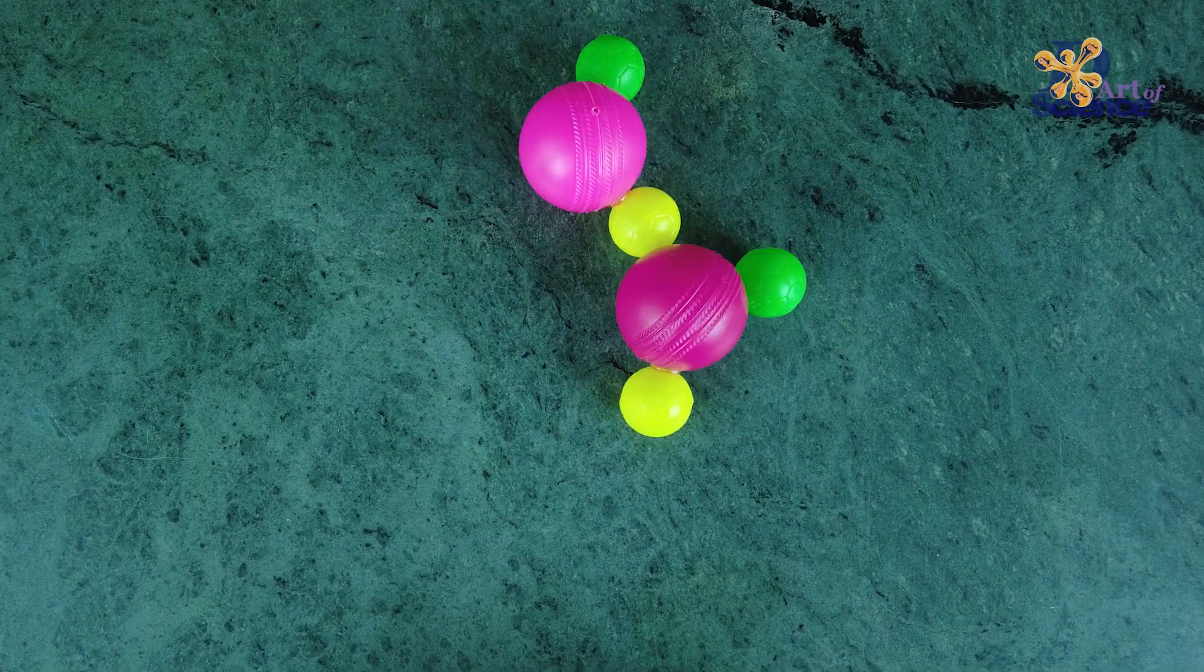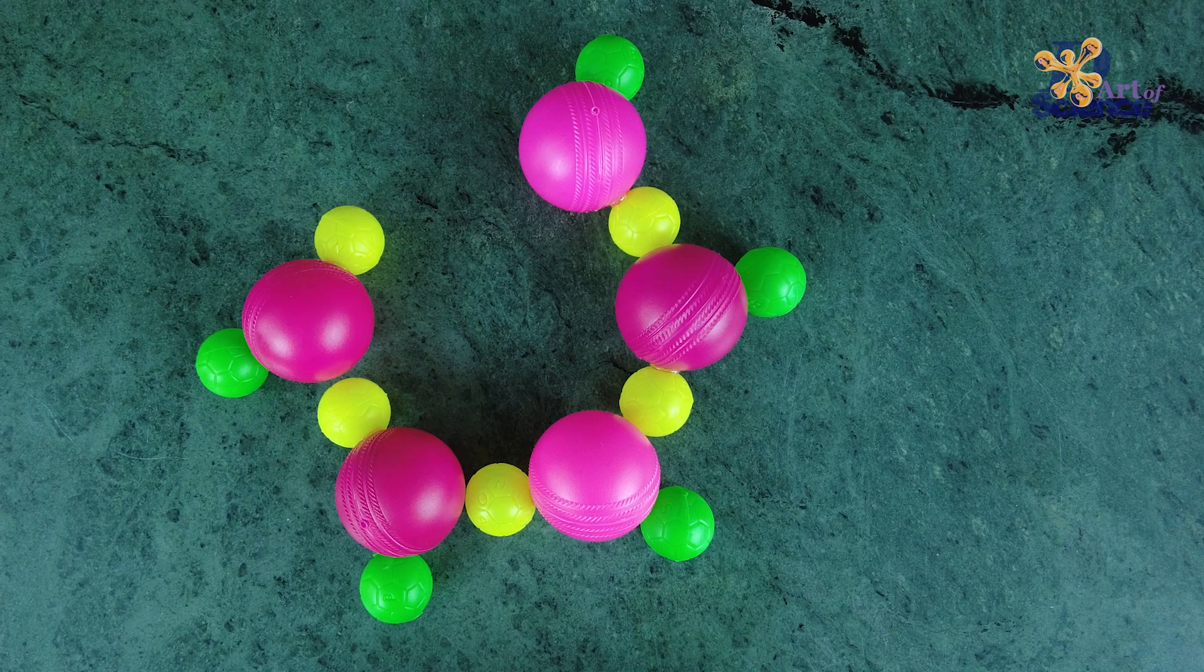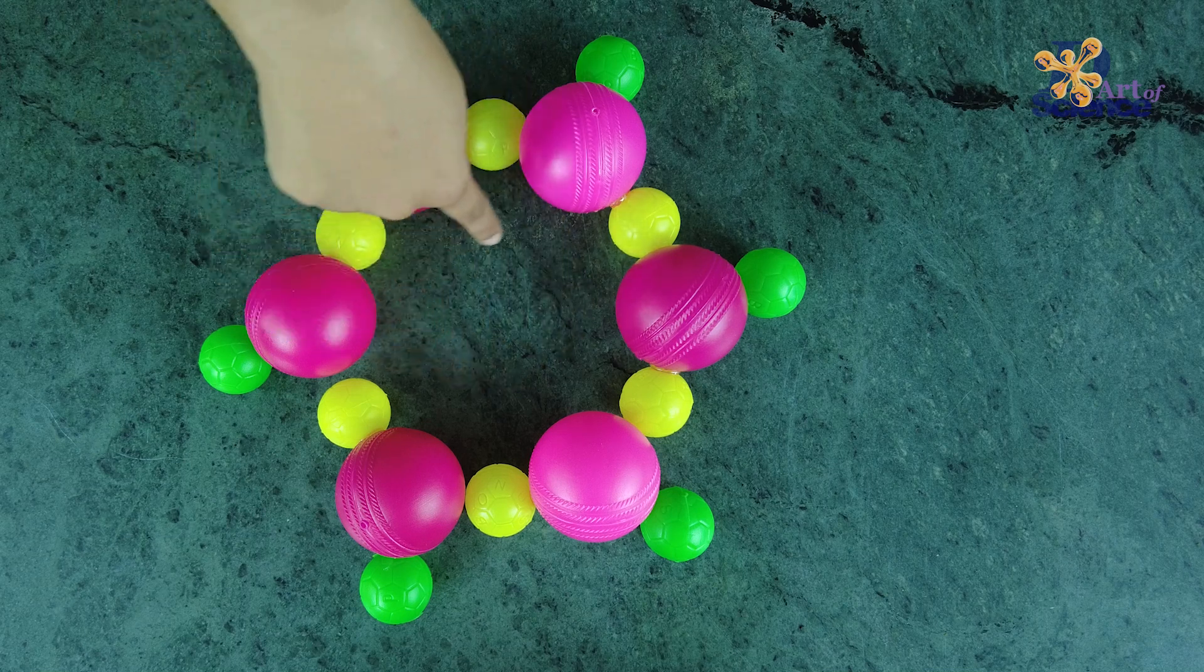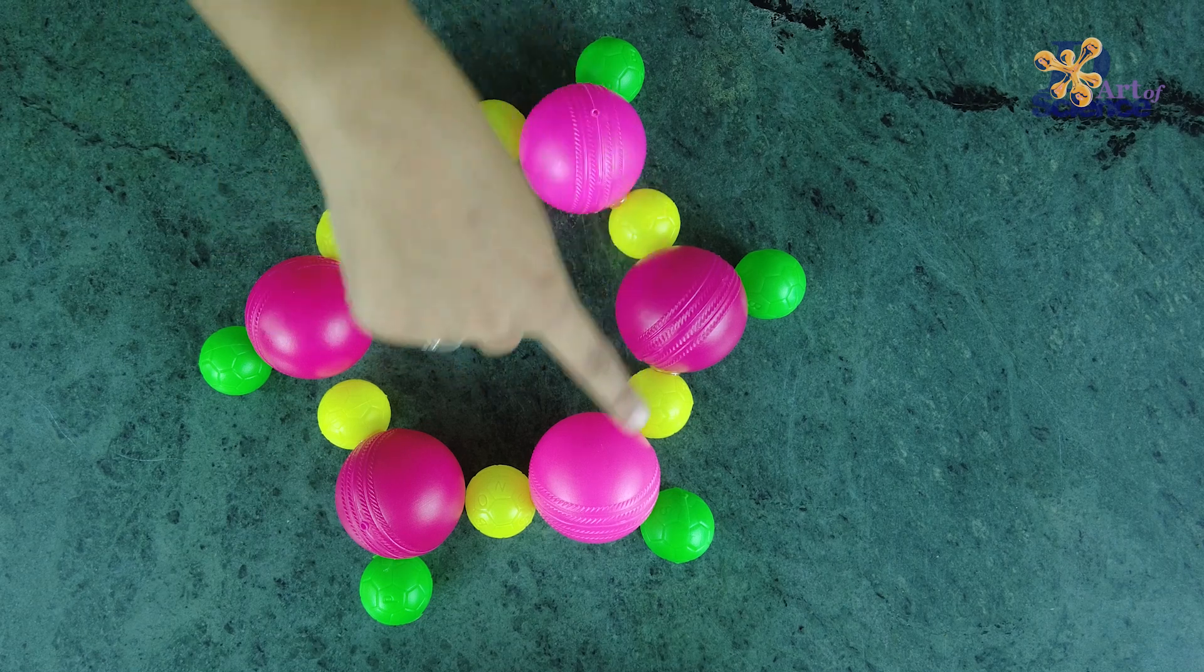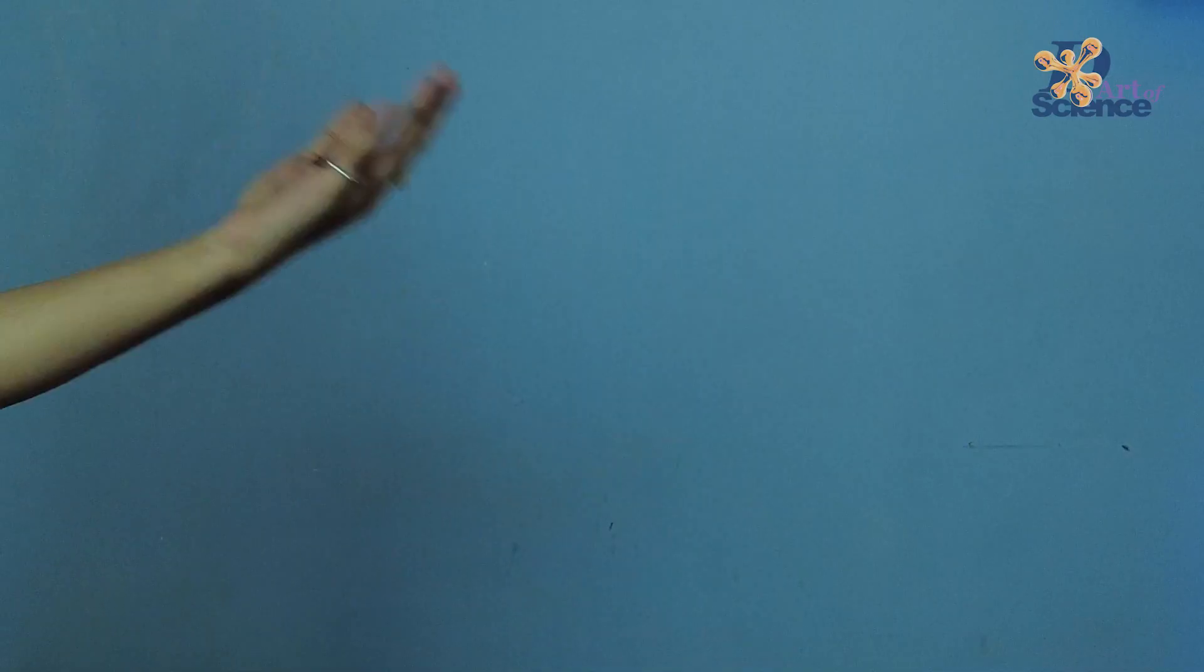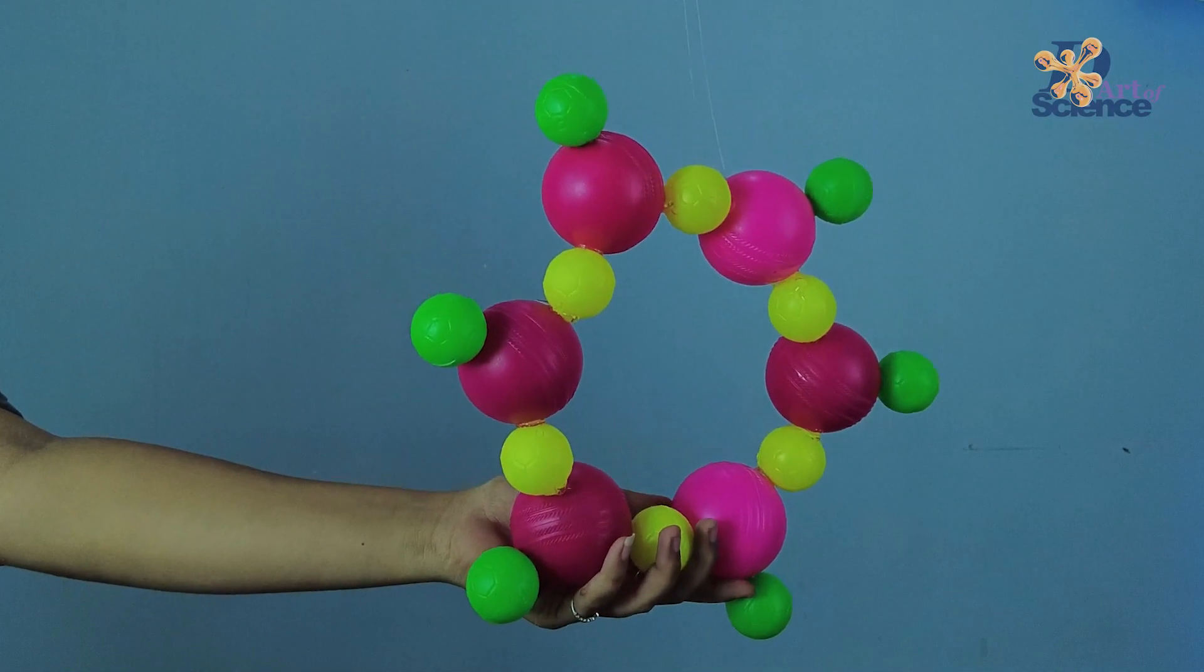This crystal has a lot of gaps in the middle, and this is why the molecules spread further apart and ice becomes less dense. Usually when temperature decreases, the density increases.